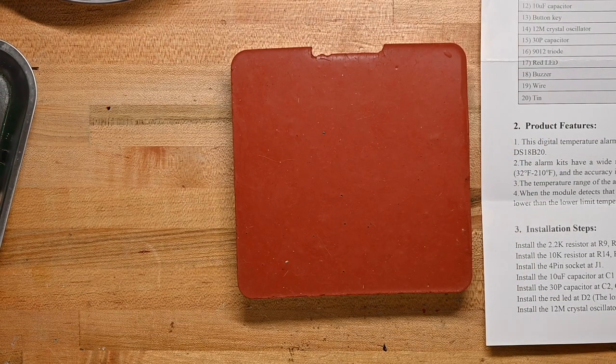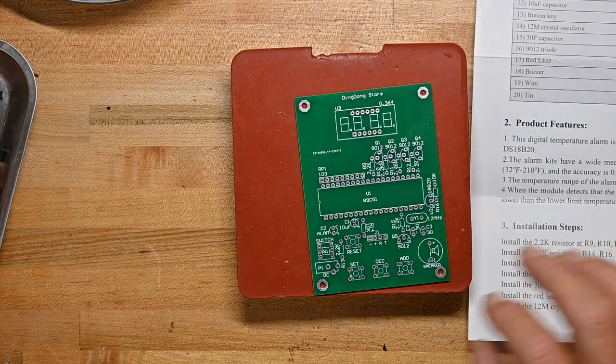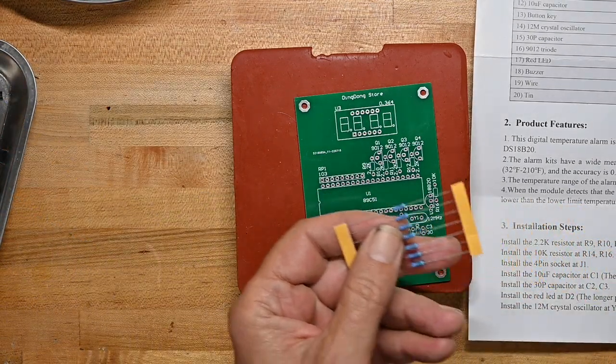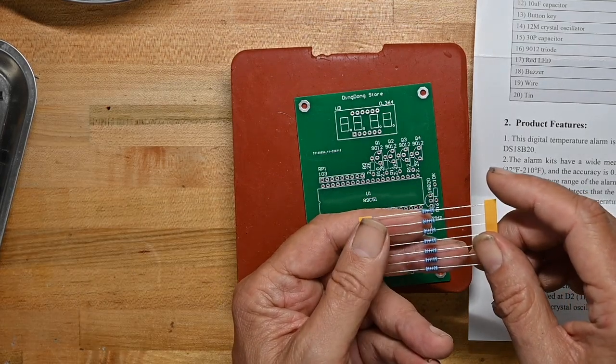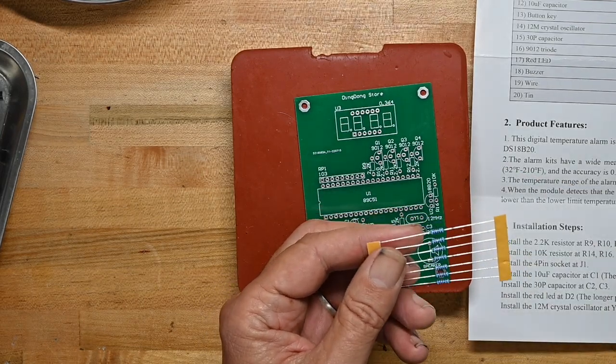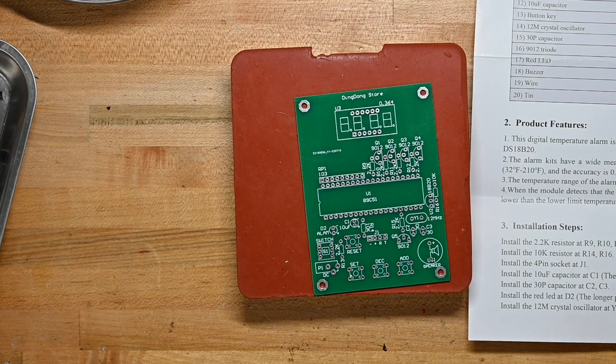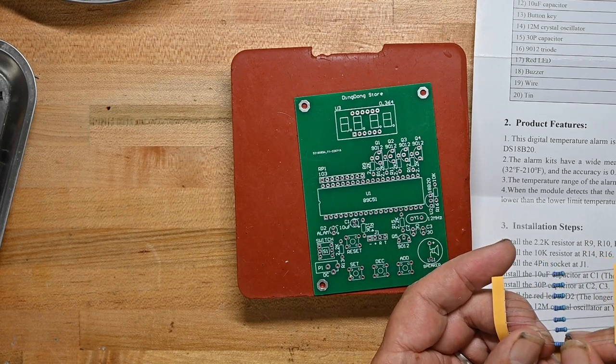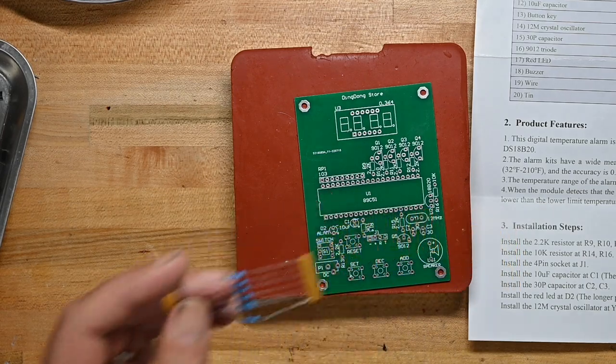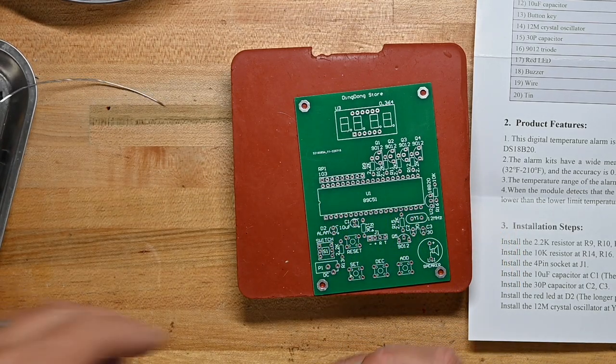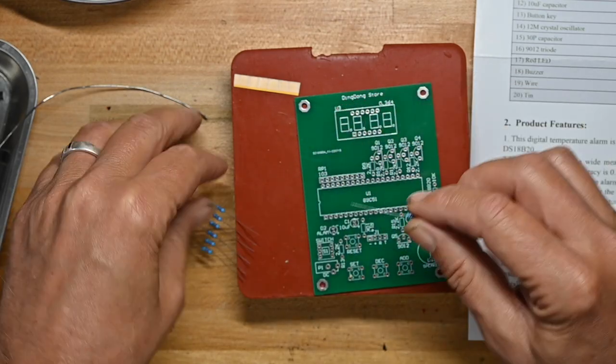So first thing we're going to do is we're going to start with our favorite, which is doing all the resistors. We're going to start with all the 2.2K. You can see red, red, black, brown for 2.2K ohm. And we'll validate that with our meter just because. Always is a good idea. Just check. 2.18. That's dandy.